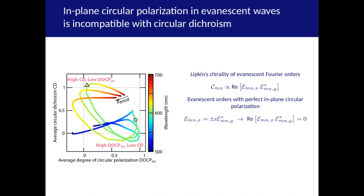That is why if we consider different periodicities of the silicon nanodisc array and see what happens to the average DOCP and CD in the unit cell when we vary the wavelength, one thing becomes clear. Whenever DOCP is maximized, CD vanishes and whenever CD is maximized, DOCP becomes very low. This is clearly different from propagating plane waves where Lipkin's chirality is proportional to the imaginary part of EX times EY conjugate. So both CD and DOCP go hand in hand.